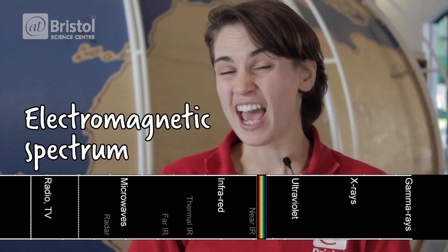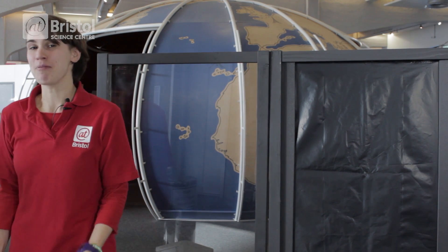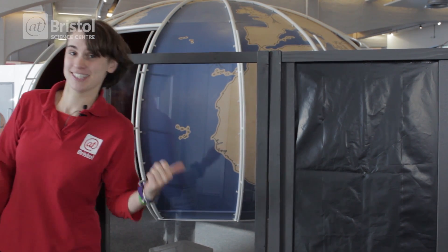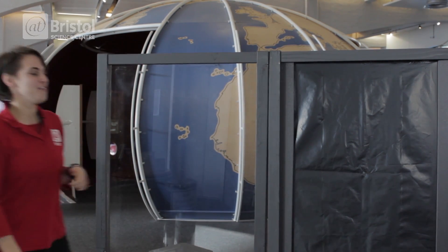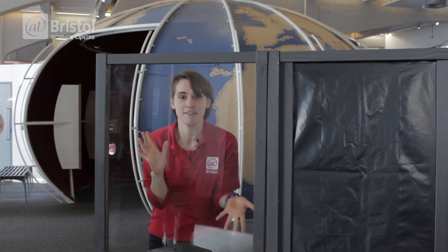Different wavelengths of light have different properties. We can demonstrate these properties using these two screens. If I stand behind this transparent screen, the visible light can get through and back to your eyes, so you can see me.